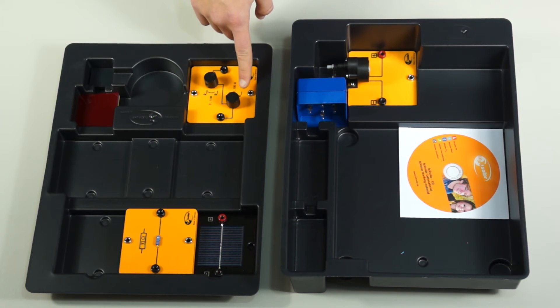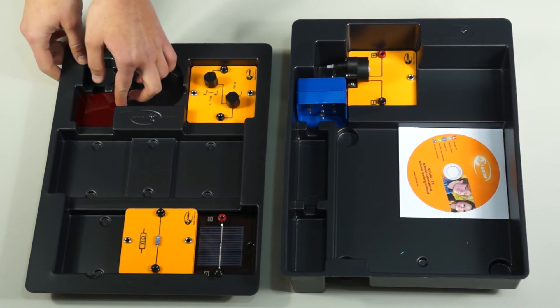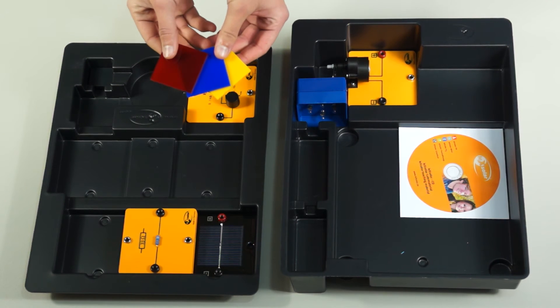With the attached potentiometer, experiments on the IV characteristics of solar cells can be performed. The transmission of light can be examined with the help of colored discs.